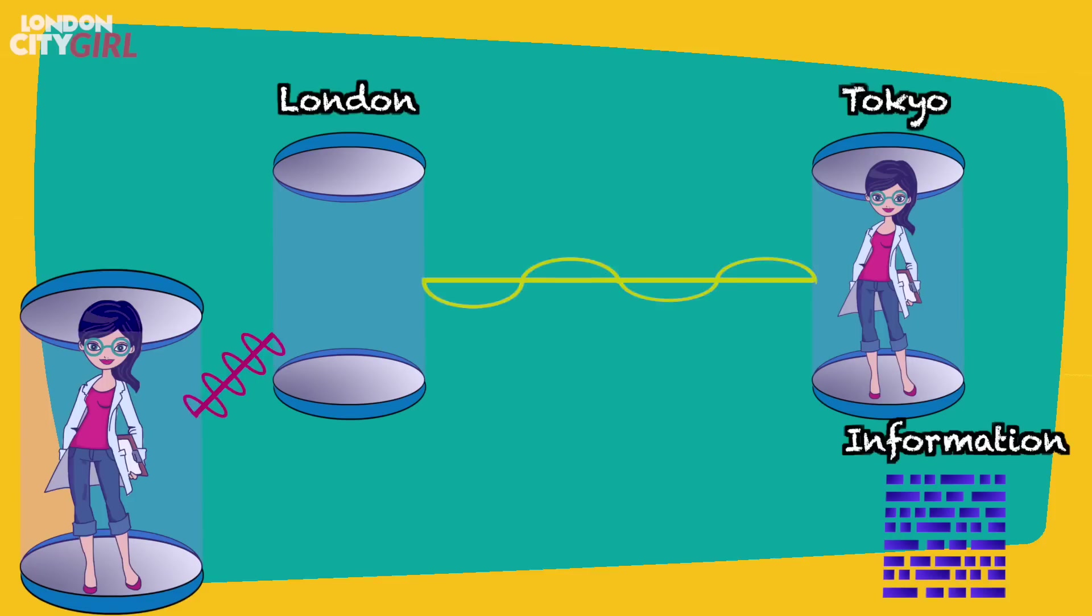Meanwhile, the original Alice in London has been destroyed. The question is, as the original Alice dies in the process of teleportation but is reconstructed at her destination in Tokyo, is the final Alice still Alice?